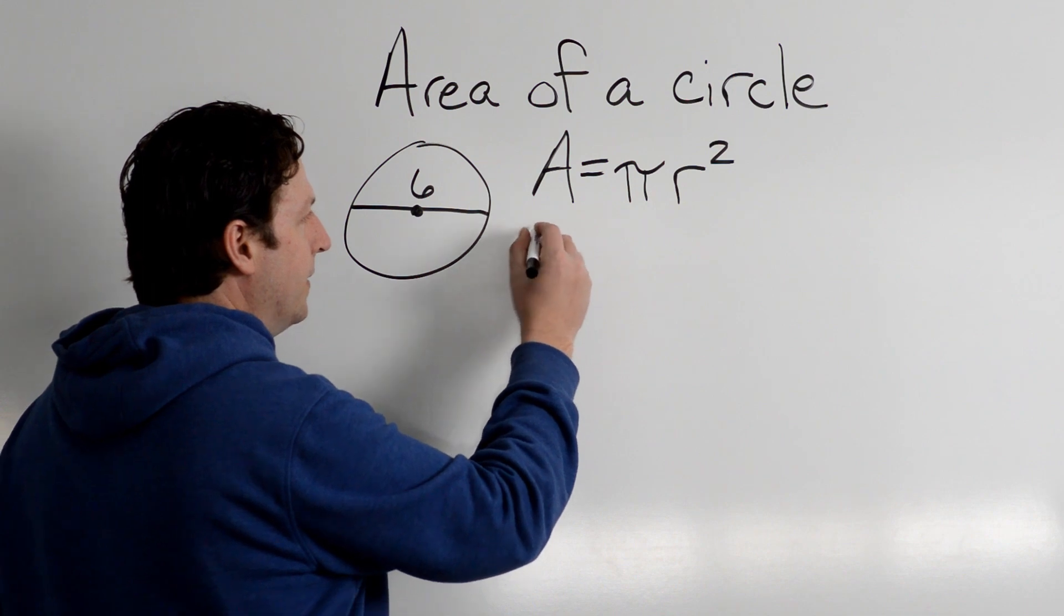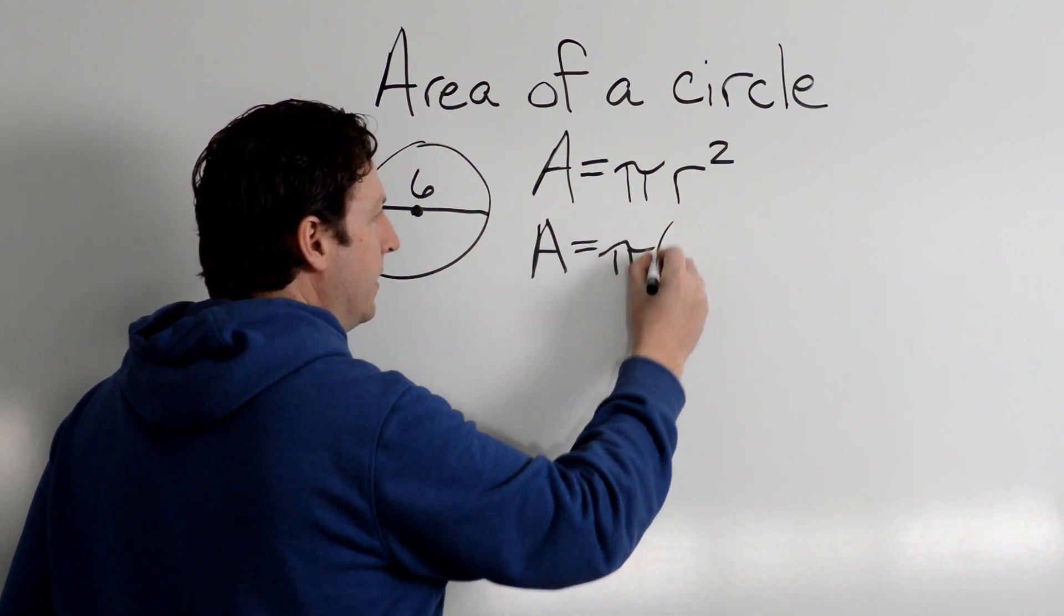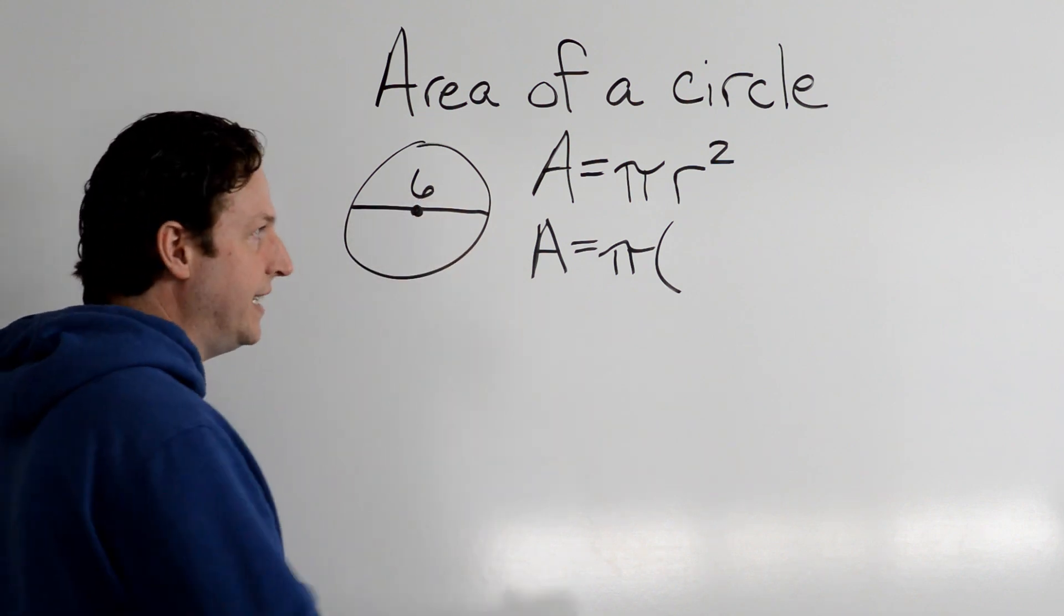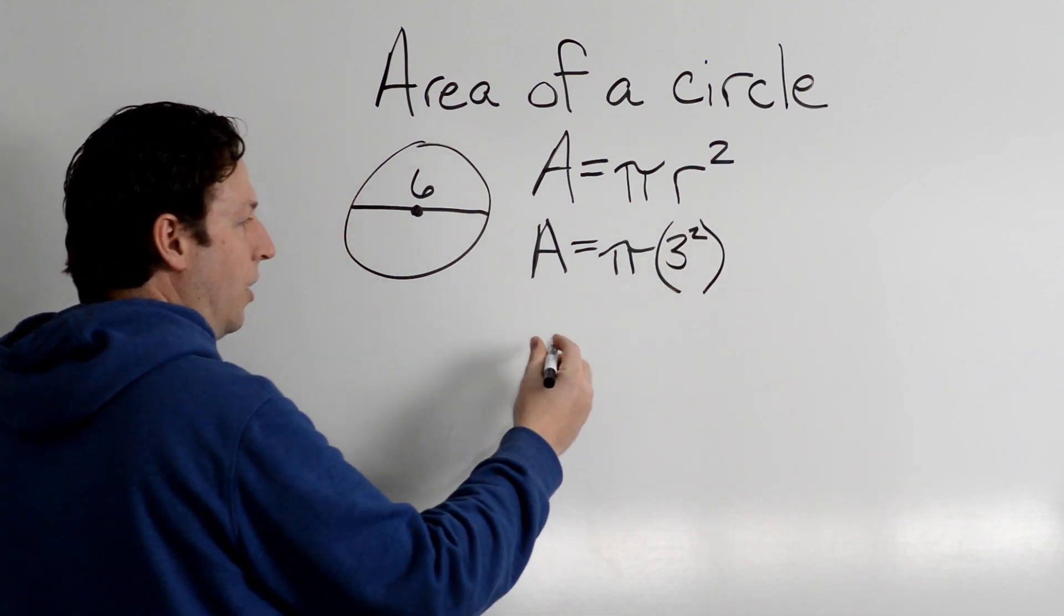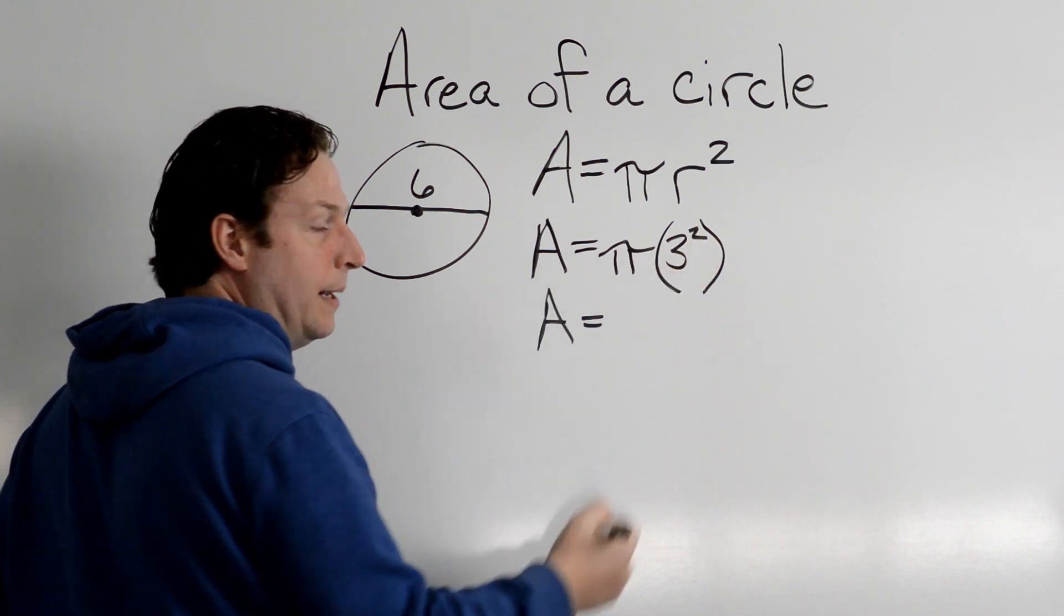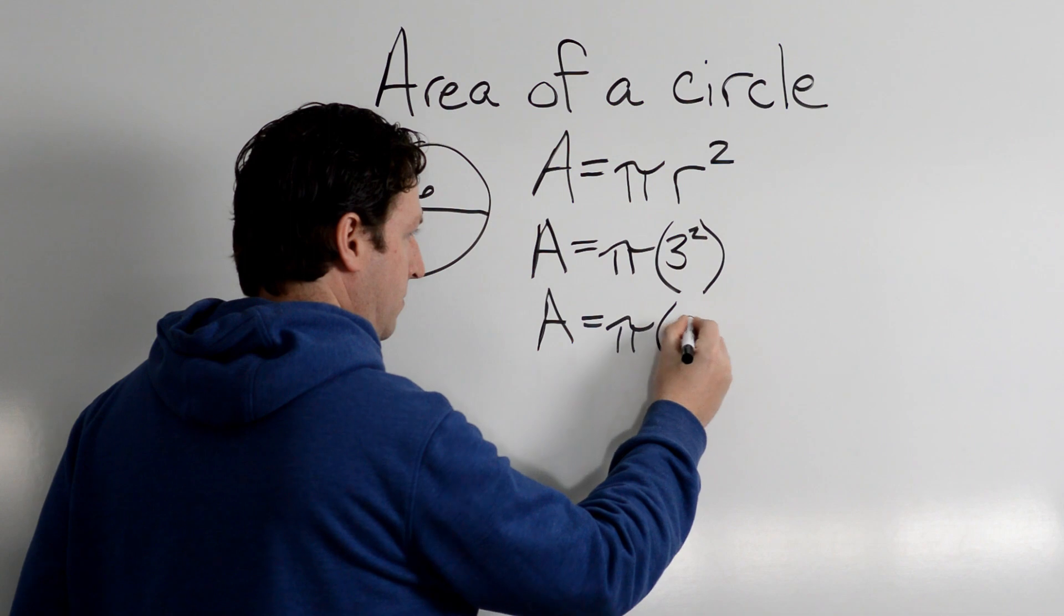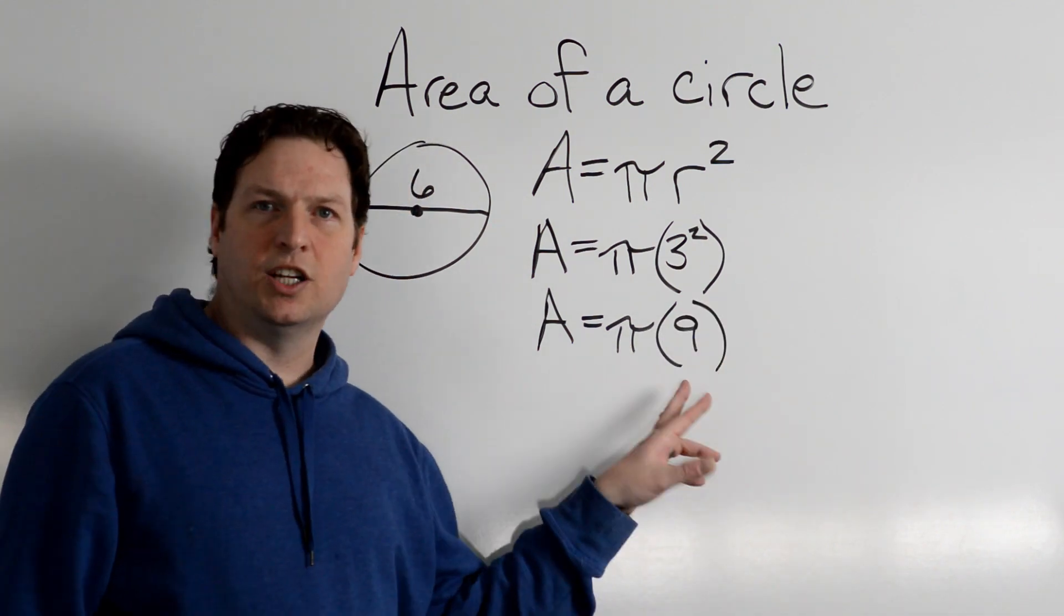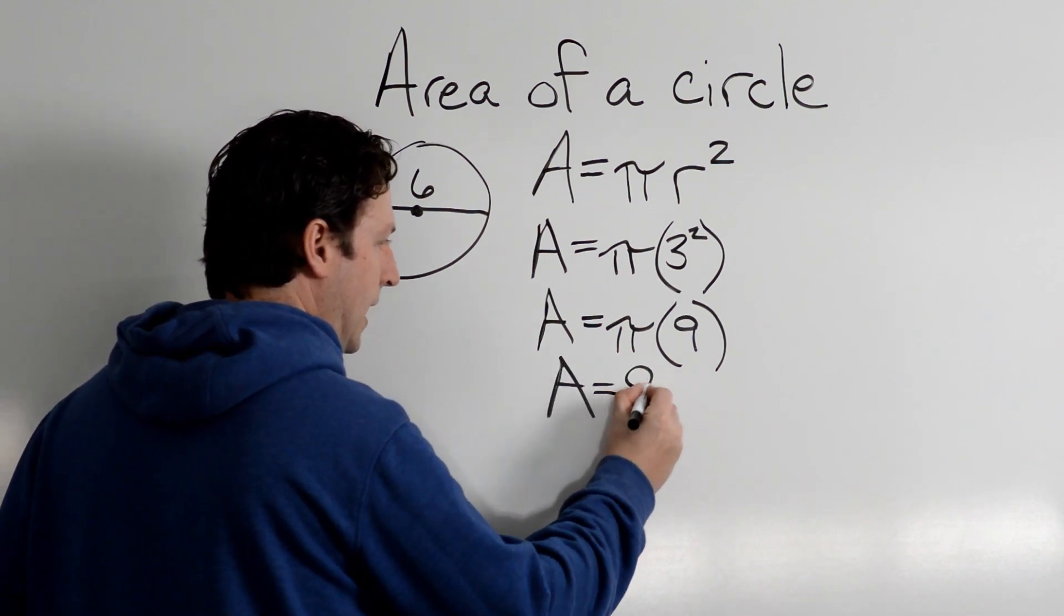So let's go ahead and plug in: A equals pi, and I know that my radius is 3, half of 6. 3 squared. So A equals 3 times 3. 3 times 3 is 9. So I'm just going to flip those around because it looks a lot cleaner: A equals 9 pi.